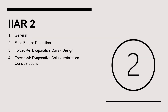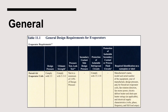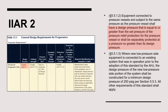Let's start with IIAR Standard 2, which addresses the design of ammonia refrigeration systems. We'll examine the items listed in Chapter 11 of Standard 2. Most of the unique air cooling evaporator requirements in the 2021 edition of Standard 2 are contained in the forced air evaporator coils row of Table 11.1. As it relates to design pressure, evaporators must have a design pressure equal to or greater than the pressure relief protection for the pressure vessel connected to the equipment. Furthermore, the design pressure must be at least 250 psi gauge.